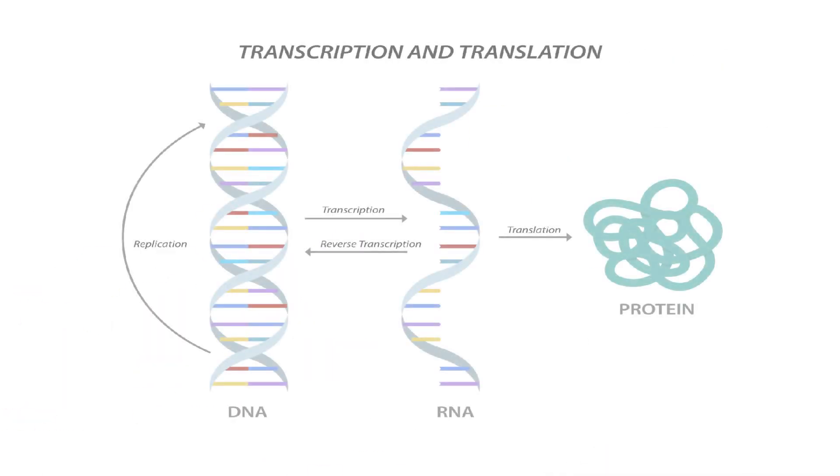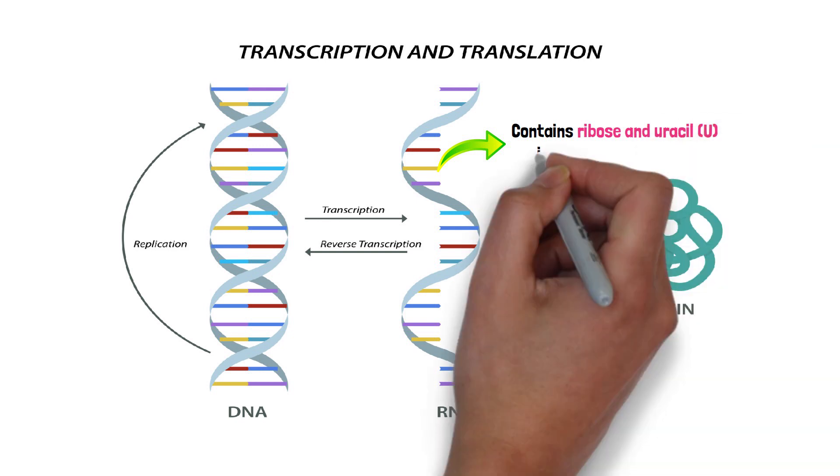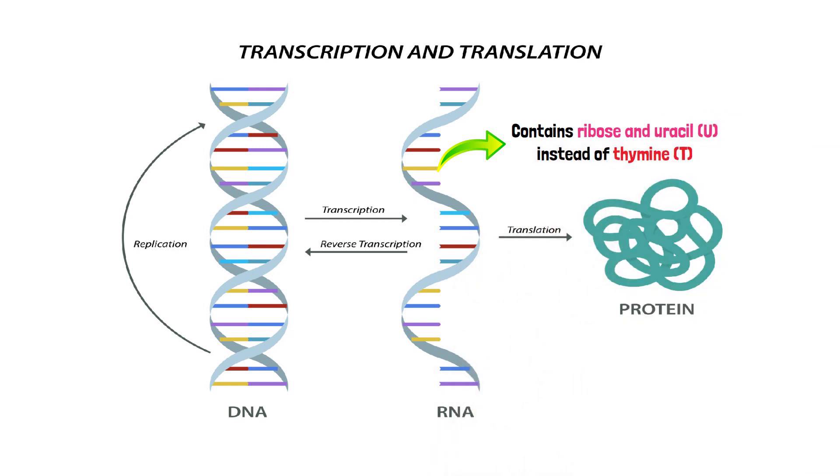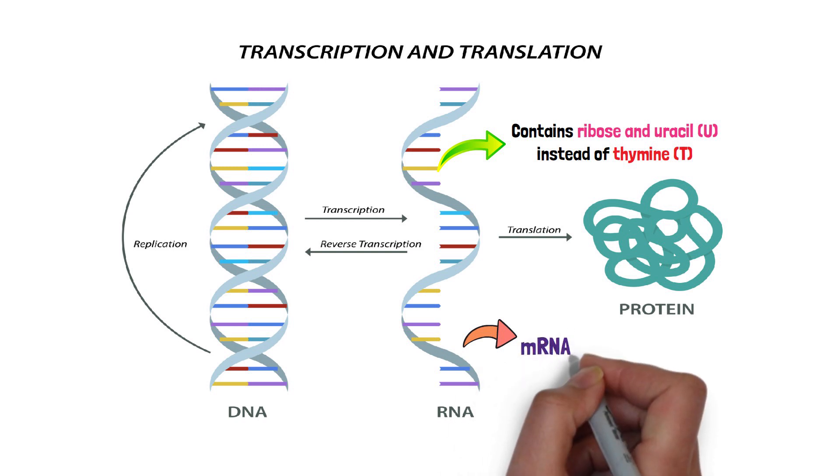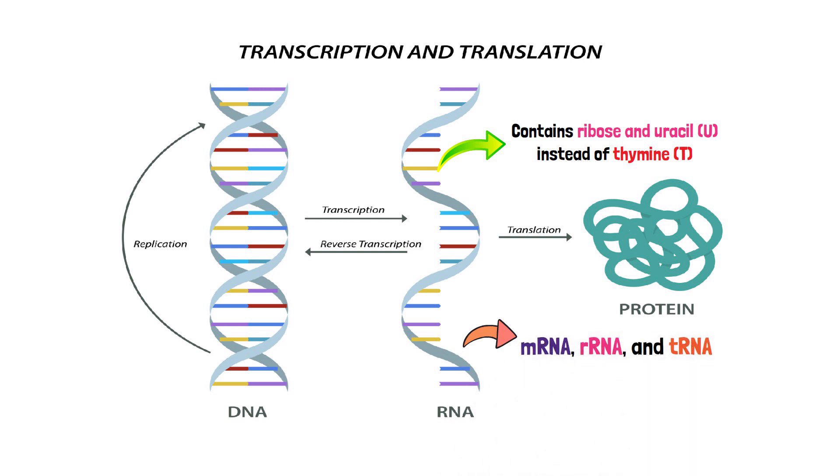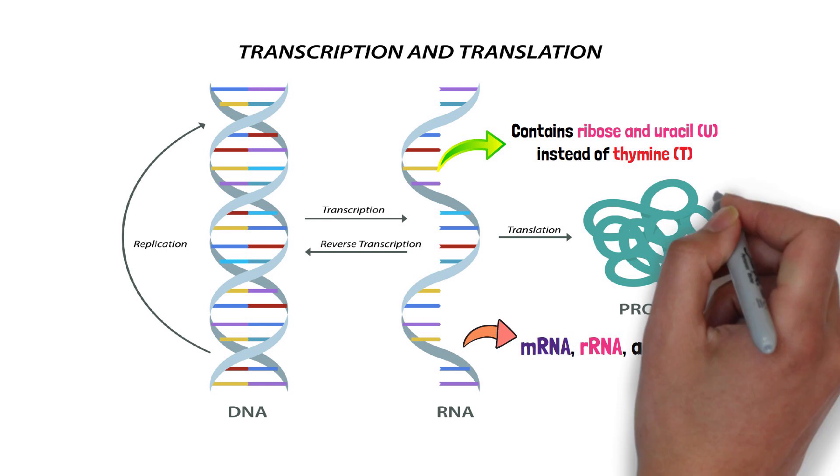DNA and RNA, while similar, have distinct roles. RNA, unlike DNA, is single-stranded and contains ribose and uracil instead of thymine. Its various forms, including mRNA, rRNA, and tRNA, are instrumental in the protein synthesis process.